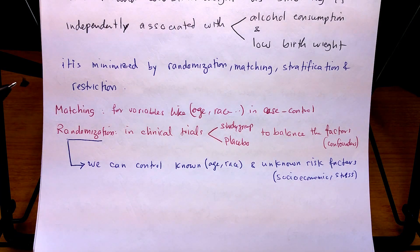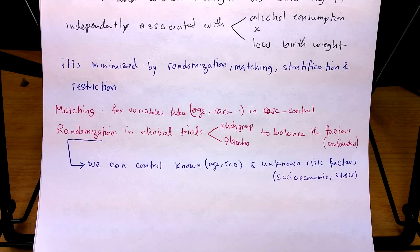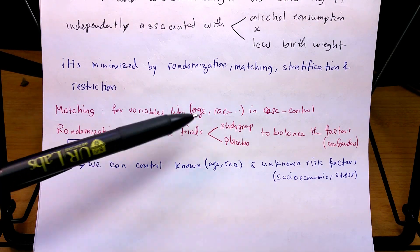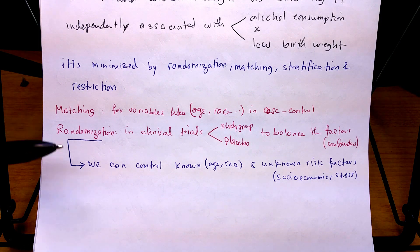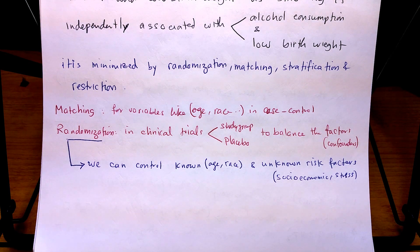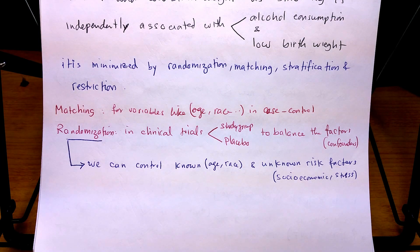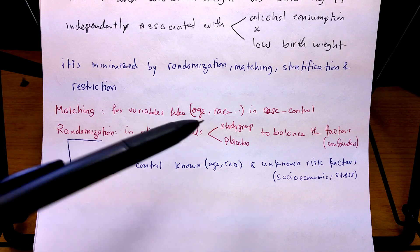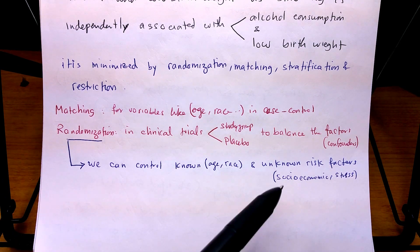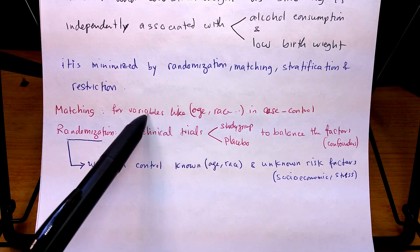What is matching? We try to match variables between both groups, like age, sex, and race. Another way is randomization — we randomize the confounders between both groups so they are equal and balanced. Randomization also helps us account for unknown risk factors like socioeconomic status, which are hard to match.